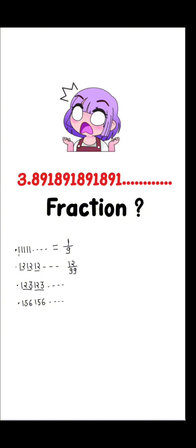Here I can see one-two-three, one-two-three, repeated — it can repeat many more times, as the dot-dot-dot represents it can go on. So I can write it as 123 upon 999. Here I can see 156 and 156 repeated, so I can write this as 156 upon 999. The basic understanding is: however many digits are repeated, we divide that number by an equal number of nines.